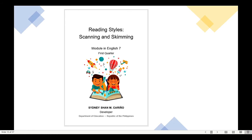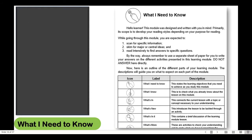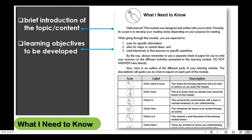Let us study the first label, what I need to know. The section gives a brief introduction of the topic or its content. On the sample module, it says that the scope of the learning material is to develop the reading styles of the learner. It also tells the learning objectives to be developed.